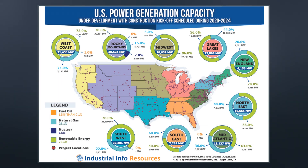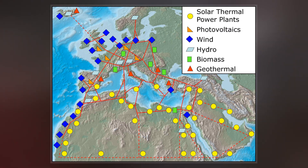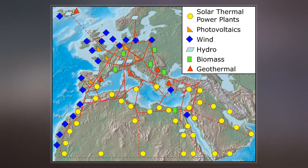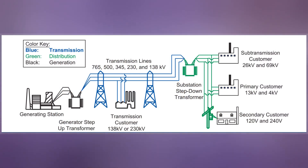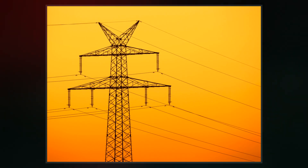In the United States in the 1920s, utilities formed joint operations to share peak load coverage and backup power. In 1934, with the passage of the Public Utility Holding Company Act, electric utilities were recognized as public goods of importance and were given outlined restrictions and regulatory oversight of their operations. From 1967, the East and West Interconnections were directly connected together.